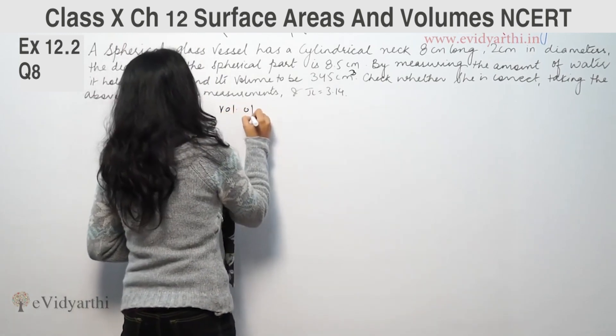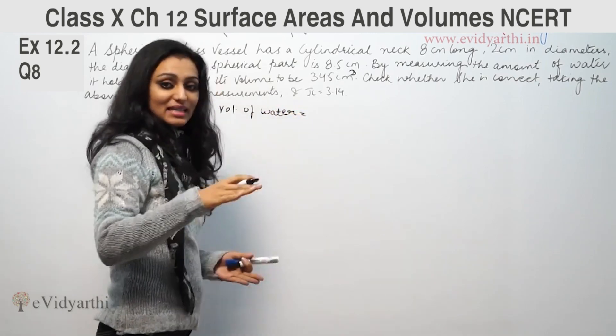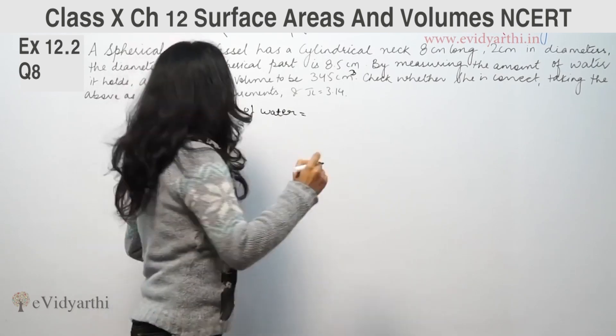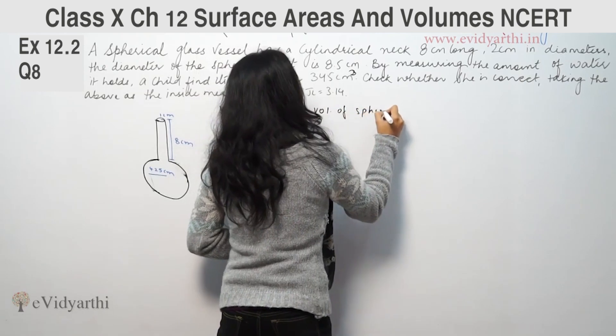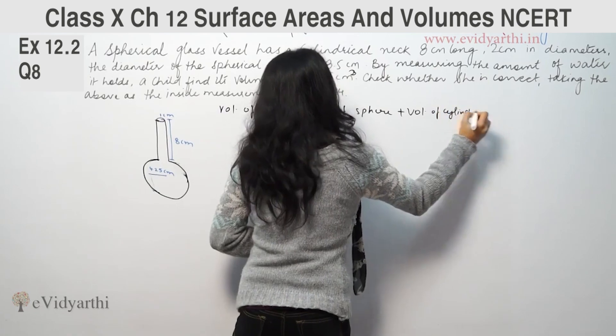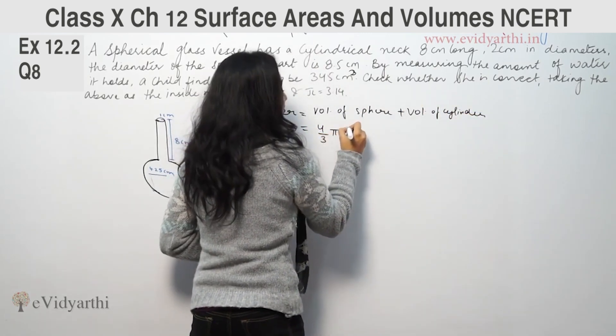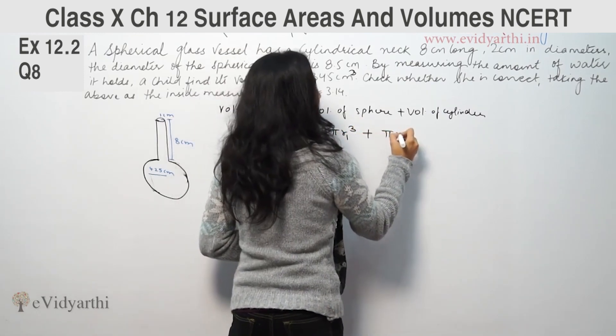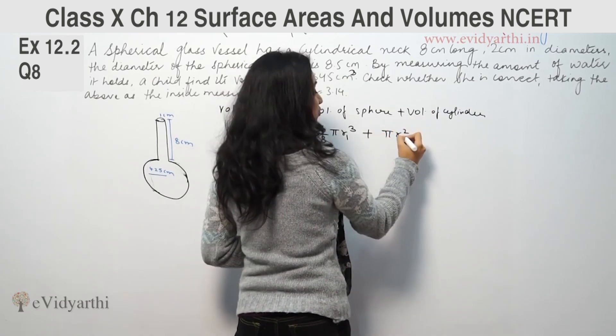First of all, volume of water that can fit in it. The volume equals the volume of sphere plus volume of cylinder. Volume of sphere is 4/3 πr₁³, because these two radii are different, plus πr₂²h.